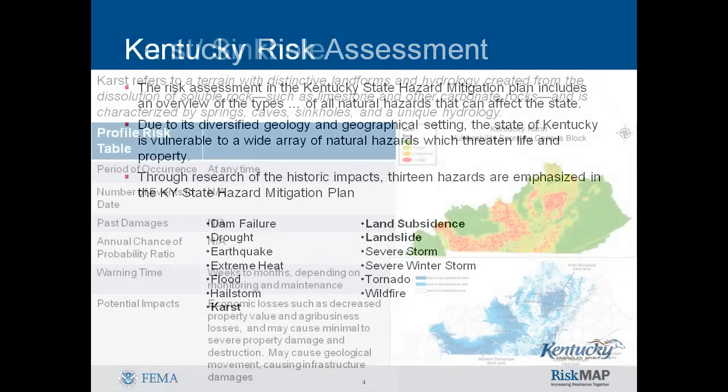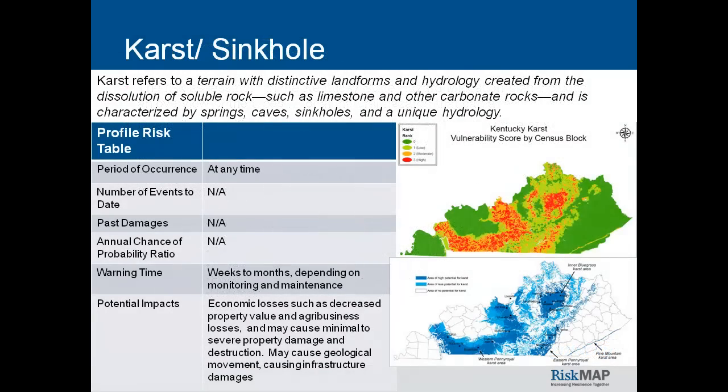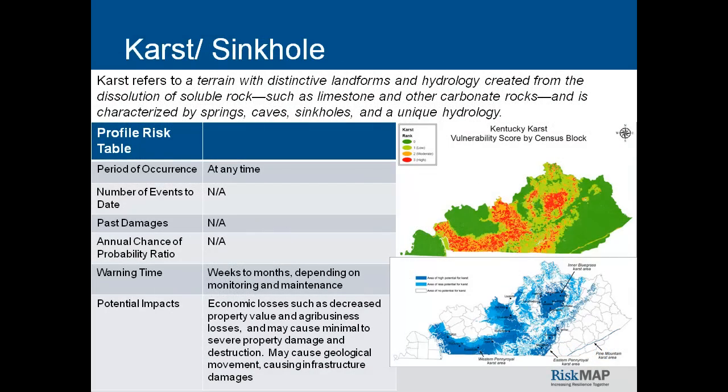Karst is a special type of landscape that is formed by the dissolution of soluble rocks, including limestone and dolomite. Karst topography is an amalgamation of caves, underground channels, and a rough and bumpy ground surface. The underground water of karst topography carves out impressive channels and caves that are susceptible to collapse from the surface. When enough limestone is eroded from underground, a sinkhole may develop.